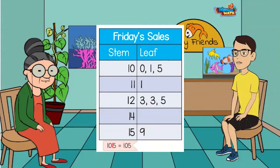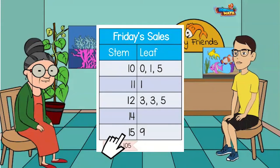I see it's all starting to make sense. The chart tells me the highest total sale of the day was $159. I looked at the 15, or the highest stem, and combined it with the highest leaf to get $159.